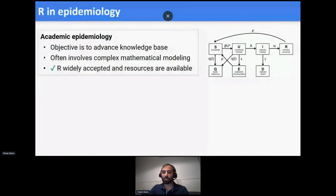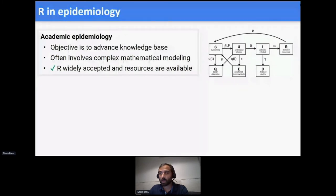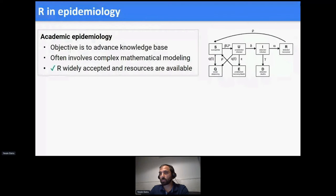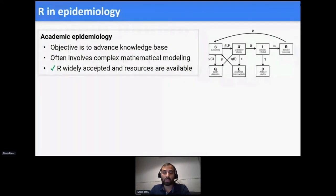This is the R Medicine Conference, but I think it's still worthwhile just describing in very crude terms the different spheres in epidemiology, because it actually has an impact on the work that we've done as Applied Epi. Generally speaking, we have academic epidemiology, where perhaps the primary objective is to advance the knowledge base. This work often involves complex mathematical modeling, and in this space, R is pretty widely accepted and resources are available, many of which have been displayed at this conference.